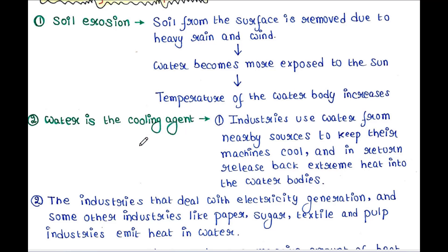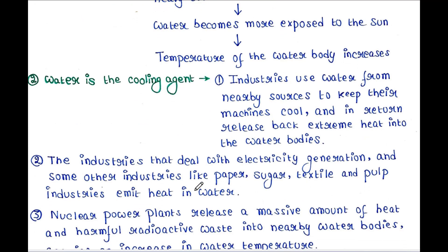Next, water is used as a cooling agent. Industries use water from nearby sources to keep their machines cool, and in return release extreme heat back into the water bodies. The industries that deal with electricity generation, and some others like paper, sugar, textile and pulp industries, emit heat into water.